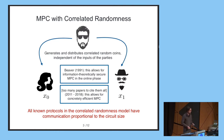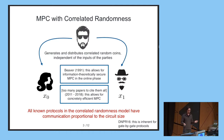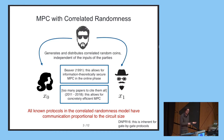So the question is to understand whether this is inherent. And actually it was proven by Damgaard et al. in 2016 that this is indeed inherent for a large class of protocols in the correlated randomness model, called gate-by-gate protocols, which captured at the time all known protocols in the correlated randomness model.